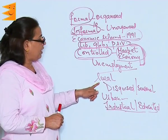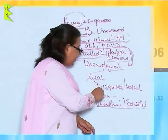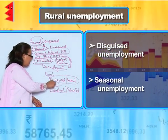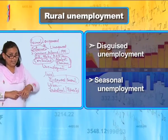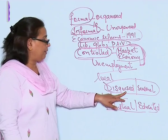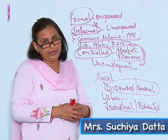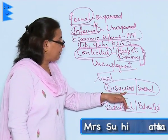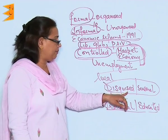When we talk of rural unemployment, there are two kinds: disguised unemployment and seasonal unemployment. Disguised unemployment is that kind of unemployment where a person feels that he is employed and working, but in fact he is not required where he is working.